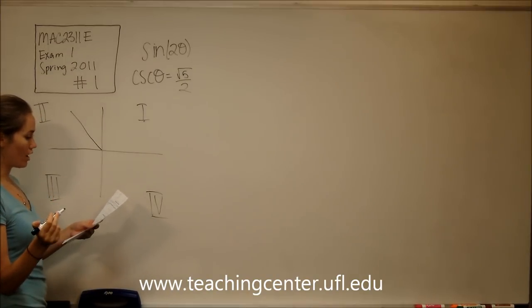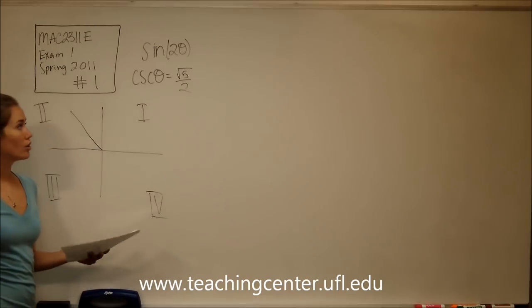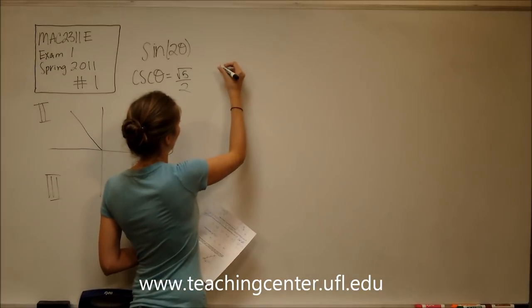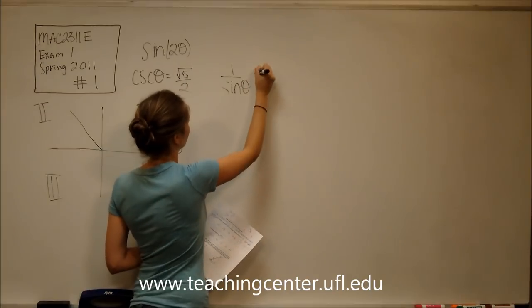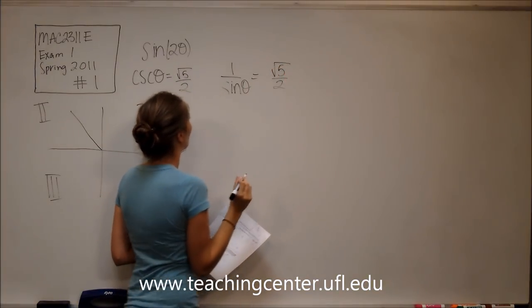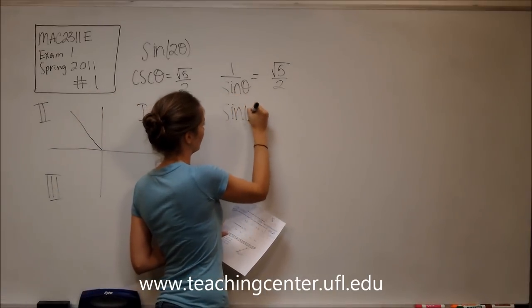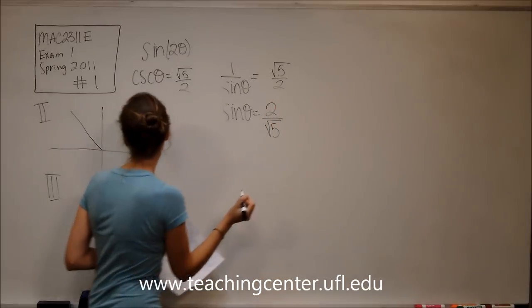And so if cosecant of theta is equal to the square root of five over two, we know cosecant is the same thing as one over sine theta. So one over sine theta is equal to square root of five over two, and so that's the same thing as saying that sine theta is equal to two divided by square root of five.